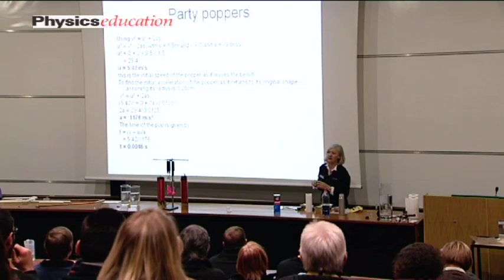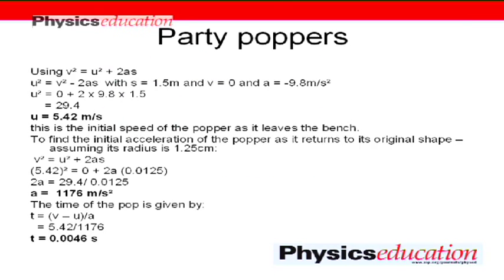Assuming that they jump about 1 and 1/2 meters, if you use v squared equals u squared plus 2as, and you assume that they're rising up and the acceleration is the acceleration due to gravity, you can then work out their initial speed at which they must have left the bench.